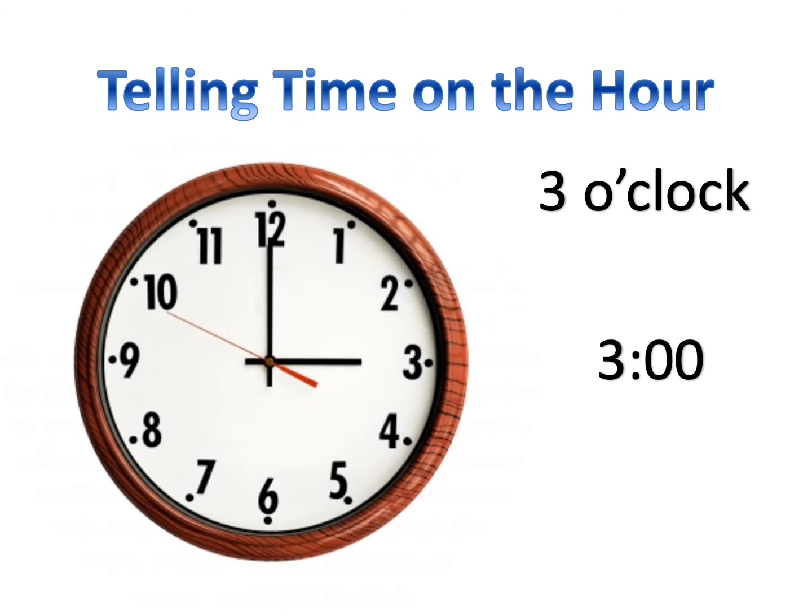There are two different ways you can write 3 o'clock. The hour hand is pointing to the 3 — that's the hour — and o'clock is because the minute hand is pointing straight up to the 12.